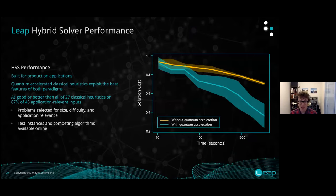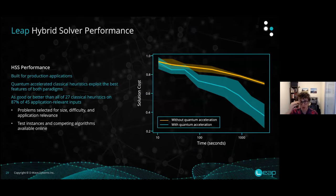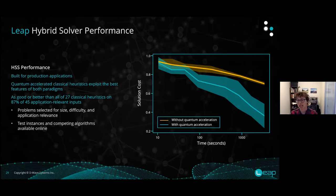A note on performance: we built the hybrid solver system with performance in mind. We have white papers available on our website. Using the third-party open source benchmarking suite MQLib — which provides state-of-the-art solver competitors and benchmark problems — we compared our solutions against theirs. We found that we were better than all 27 classical heuristics on 87% of application-relevant inputs. That's extremely good — all these solvers are heuristics, and there's the No-Free-Lunch theorem, which states there is no one true solver, so 87% is really excellent.